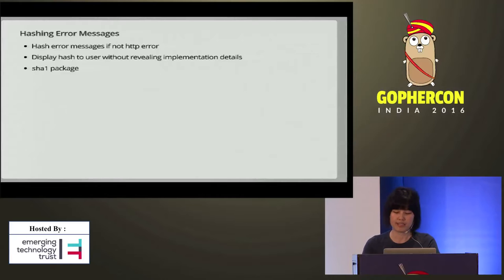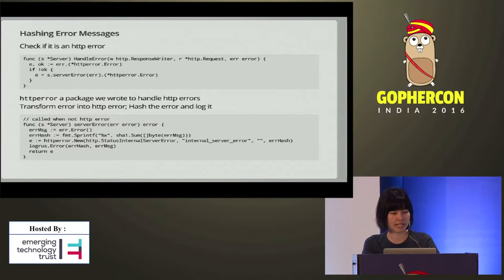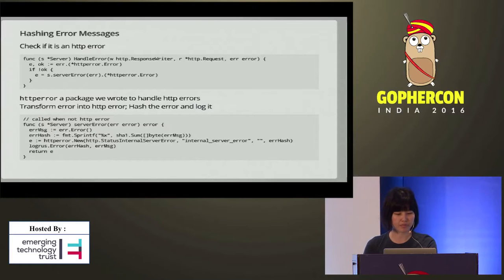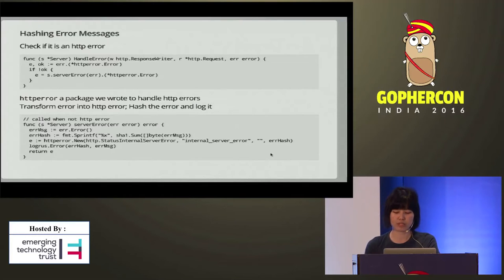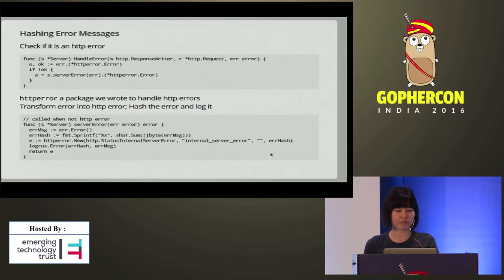Another trick we use is that we hash error messages and display them to the user if it's not an HTTP error. We display this hash to our user without revealing implementation details. We make use of the SHA1 package from Go. handleError checks if it's an HTTP error; if it's not, it calls serverError, which hashes the error message, prints it onto our server logs, and also displays the hash to the user. All we have to do is ask the user to copy and paste the error hash if there's a problem, and then we can trace the error in the backend on our own. It's not very difficult to implement with Go.